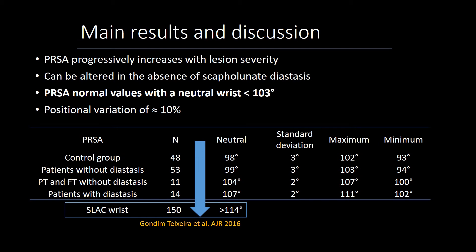The posterior radial scaphoid angle normal value with the wrist in the neutral position should be below 103 degrees. This can be used as a reference value. There was also a positional variation of about 10 percent during radial-ulnar deviation of the wrist, which should be considered when evaluating the wrist in different positions.